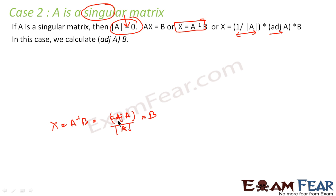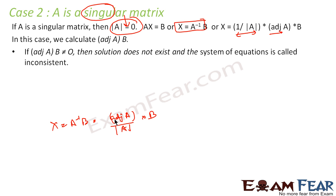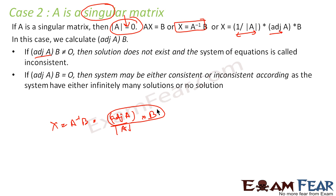Option one: if adj(A) · B is also zero, we get a 0/0 form — in that case the system may have infinite solutions. Option two: if adj(A) is not zero but det(A) is zero, it is not a 0/0 form, and the system has no solution. So if adj(A) · B ≠ 0, no solution exists. If adj(A) · B = 0, the system may be consistent with infinite solutions or may still have no solution.